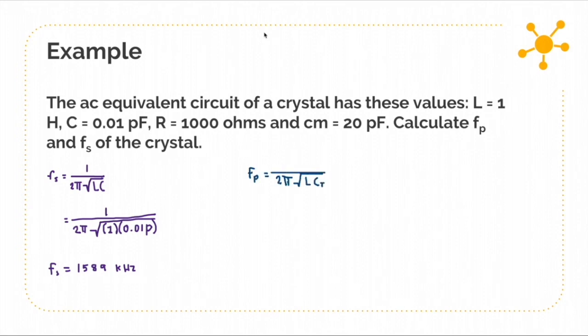Now for the Fp, it is 1 over 2π square root of L times Ct. Ct is C times Cm over C plus Cm. Let's get the value of Ct by substituting the values of C and Cm. So our Ct is 9.99 times 10 to the negative 15 farads.